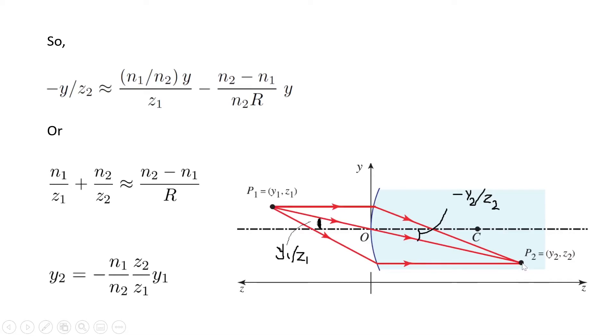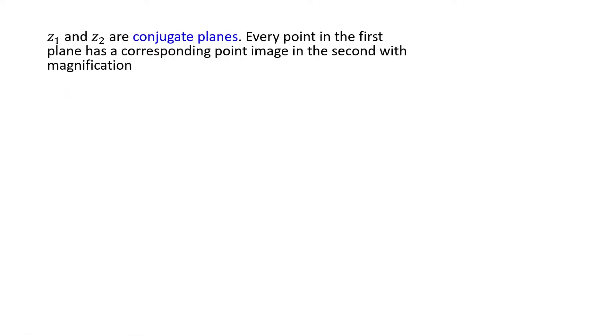And also, if I put the object at point P2, I get an image at point P1. These two points are conjugate points.